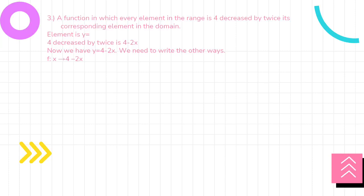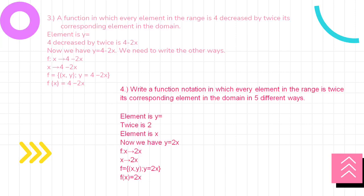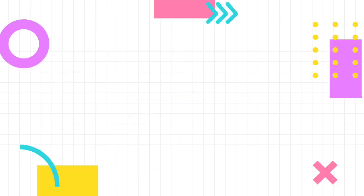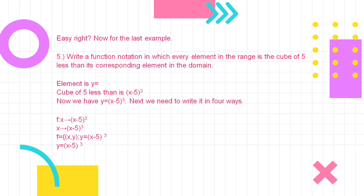We also write the other notation forms for each. Fourth example: 'Write the function notation in which every element in the range is twice its corresponding element in the domain in five different ways.' y equals 2x. For the last example: 'Write the function notation in which every element in the range is the cube of 5 less than its corresponding element in the domain.' y equals (x minus 5) cubed. Then write it in the other four ways.